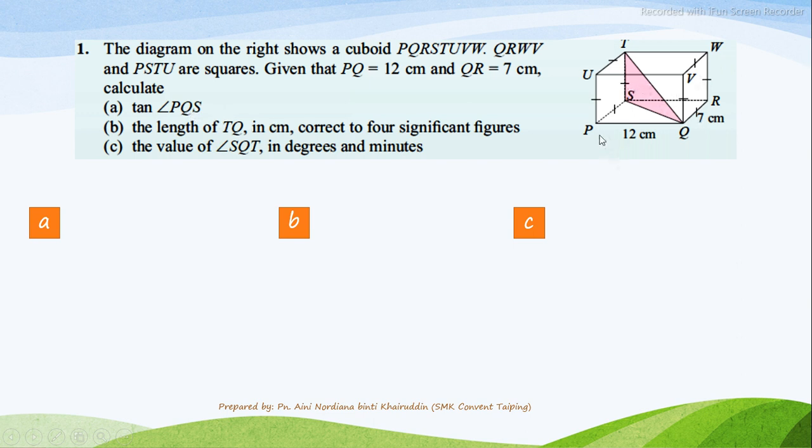Angle PQS is here. I'll show you. This is angle PQS. So tangent PQS equals to 7 over 12, opposite over adjacent.